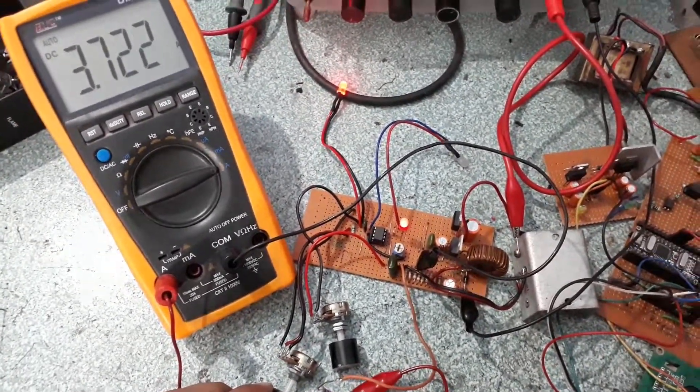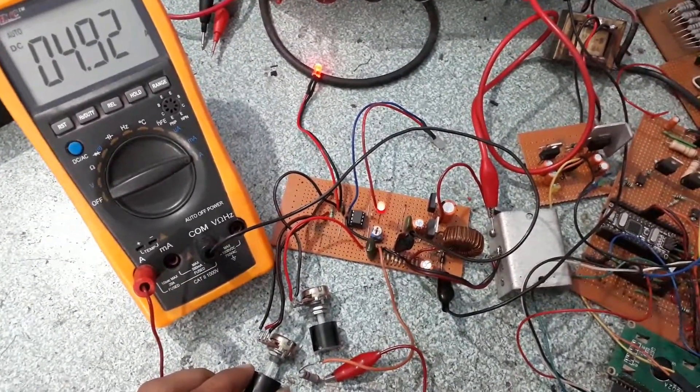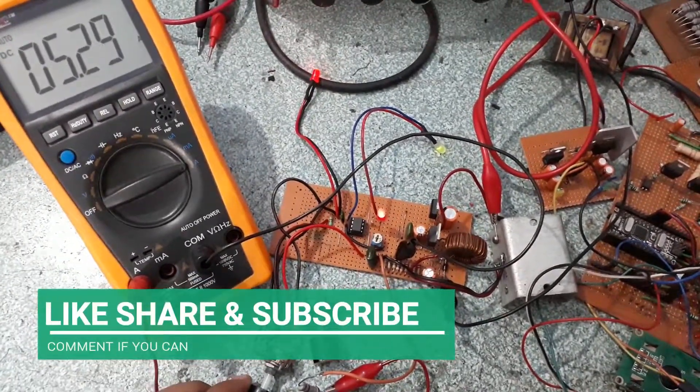So there you have it, a variable power supply which can go from 10mA to 6A and voltage from 1V to 30V.